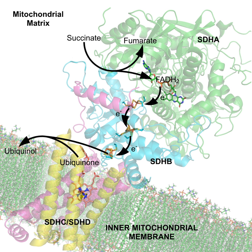Other coenzymes — flavin adenine dinucleotide (FAD), biotin, and lipoamide — are tightly bound. Tightly bound cofactors are, in general, regenerated during the same reaction cycle, while loosely bound cofactors can be regenerated in a subsequent reaction catalyzed by a different enzyme. In the latter case, the cofactor can also be considered a substrate or cosubstrate.